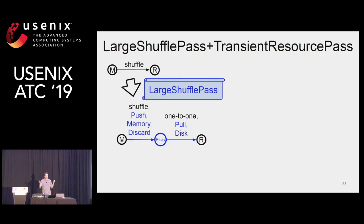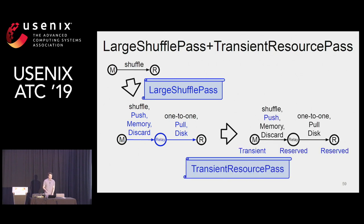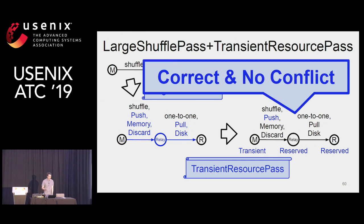These two passes can be composed. Given a single IR DAG, we apply the large shuffle pass, and on top of that we apply the transient resource pass to get an IR DAG with both optimizations combined. Nemo checks that this IR DAG is correct and that there was no conflict between the two passes.